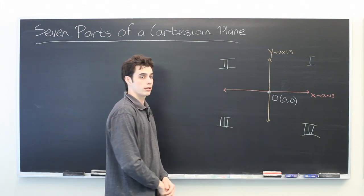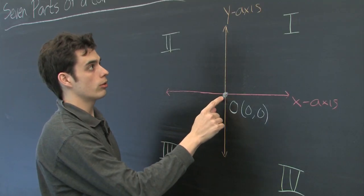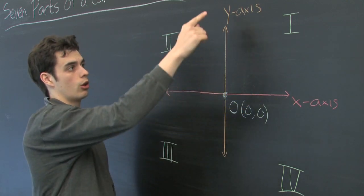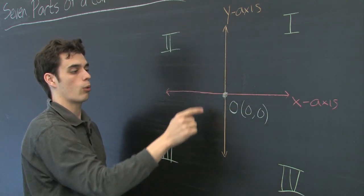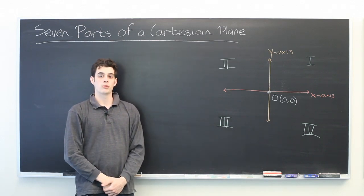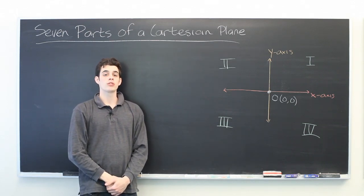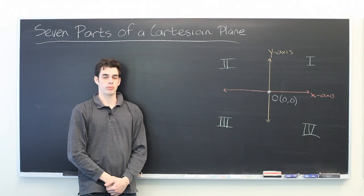So, our seven parts: the origin, the x-axis, the y-axis, and our four quadrants. My name is Ryan Malloy and we have just discussed the seven parts of the Cartesian plane.